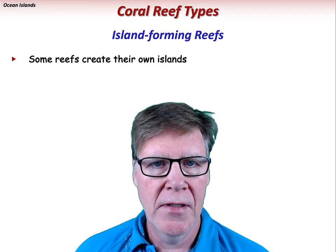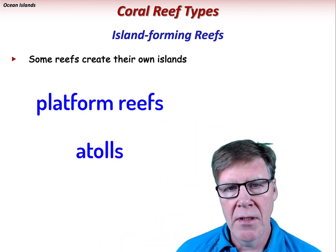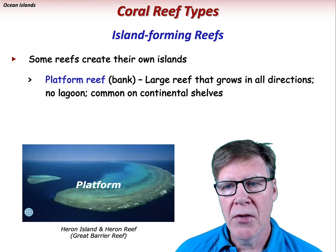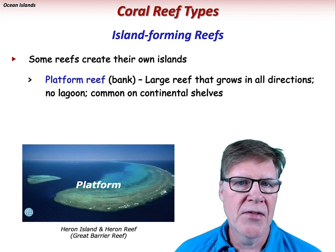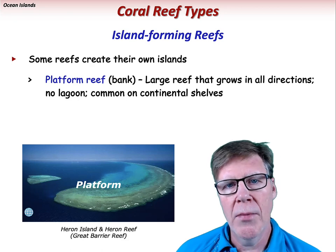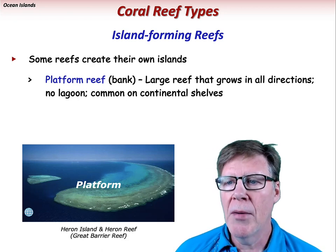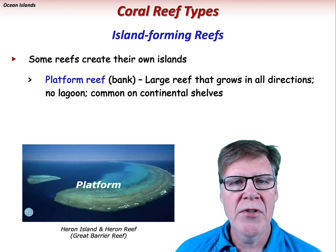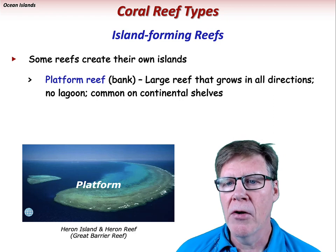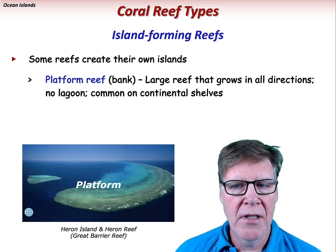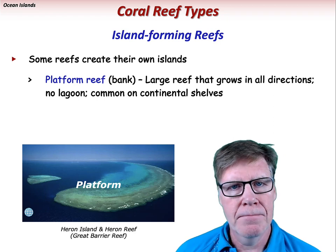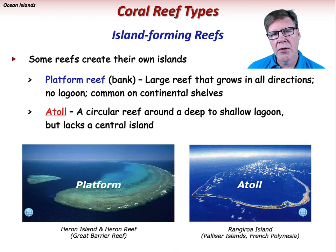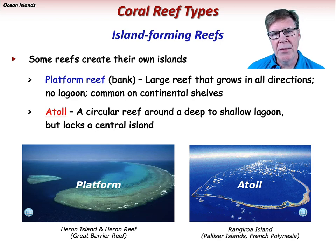Some reefs create their own islands, and include platform reefs and atolls. A platform reef, or bank, is a large reef that grows in all directions and does not have a central lagoon. These are common on continental shelves. The Grand Bahama Bank and the Great Barrier Reef contain numerous examples of platform reefs. Haran Island and Haran Reef are located in the Great Barrier Reef along Australia's eastern continental shelf. An atoll is a circular reef around a shallow to deep lagoon with no central island. Rangaroa Island in French Polynesia is an excellent example of an atoll.